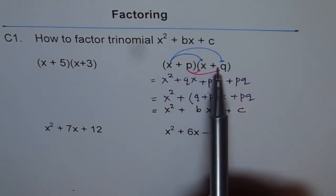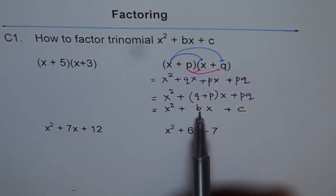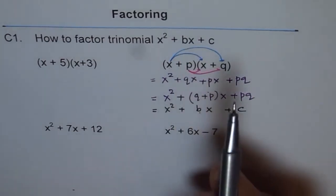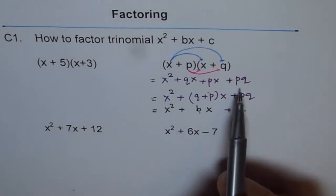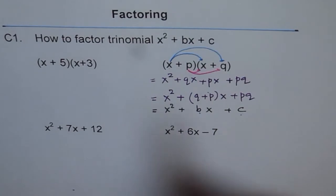That is, that these two p and q's, they come as a sum in the center, which should be equal to b, and they come as a product at the end, which should be equals to c.